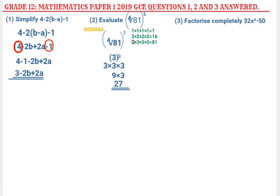Let's go to question 3, which is: factorize completely 32x squared minus 50. Before I start working out, what I want to do is ignore x squared for now and just focus on 32 and 50. We are going to find a factor — the greatest common factor — that can go into both 32 and 50.